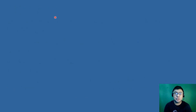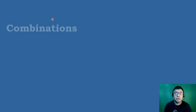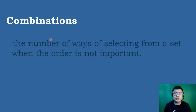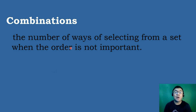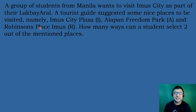Let's define first what is a combination. When we say combinations, it refers to the number of ways of selecting from a set when the order is not important. Combinations is an arrangement of objects wherein the order does not matter.